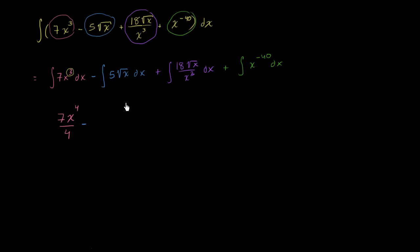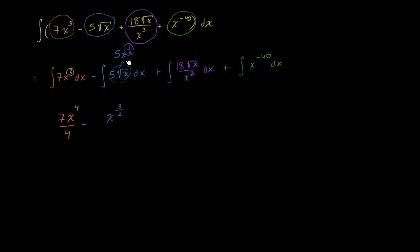From that we subtract the antiderivative of the next term. It might not be obvious at first, but 5 times the principal square root of x is the same thing as 5 times x to the 1/2 power. The exponent is 1/2, so we increment it to get x to the 3/2, and then divide by 3/2. We still have the 5 out front.